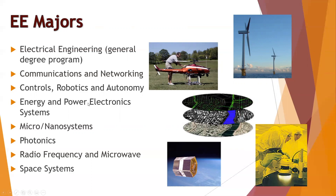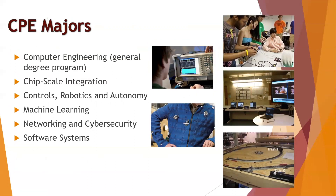These are all the different majors in electrical engineering. They're all pretty related — communications and networking is used a lot in energy and power electronic systems, RF and microwave is used everywhere, and space systems requires almost everything, including robotics and autonomy. Even though they're separated, they work in conjunction with each other, which is what you do as an engineer — work with other engineers. In computer engineering, we have a general degree as well, and a lot of the work involves software projects where you get a physical board and implement it, which is a neat way to see both sides of how something gets put together.